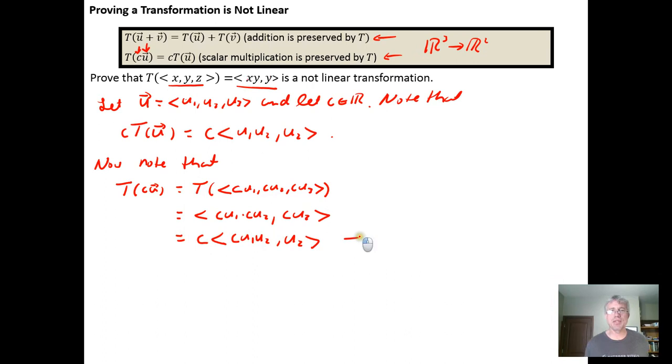And what we want to notice is that this result here is not the same as this result here. We're missing a scalar C on the inside that we have here. So we see that this is not equal to C times T of U from up here.